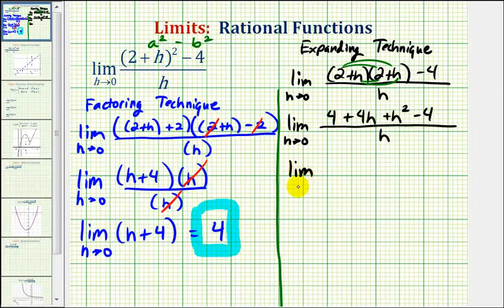Now we'll go ahead and simplify the numerator. Notice how we have four minus four, that's zero. So we're left with four h plus h squared. And these two terms have a common factor of h, so go ahead and factor the h out, leaving us with h times the quantity four plus h, all over h.